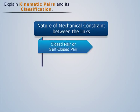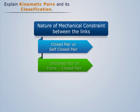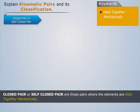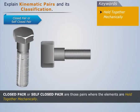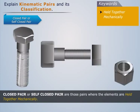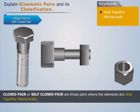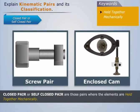On the basis of the nature of mechanical constraint between the links, kinematic pairs can be classified into closed pair or self-closed pair, and unclosed pair or force-closed pair. Closed or self-closed pairs are those where the elements are held together mechanically. In such pairs, one of the links is solid while the other is hollow, and the hollow link encloses the solid one. This type includes all lower pairs and some higher pairs; screw pair and enclosed cam-follower are a few examples.